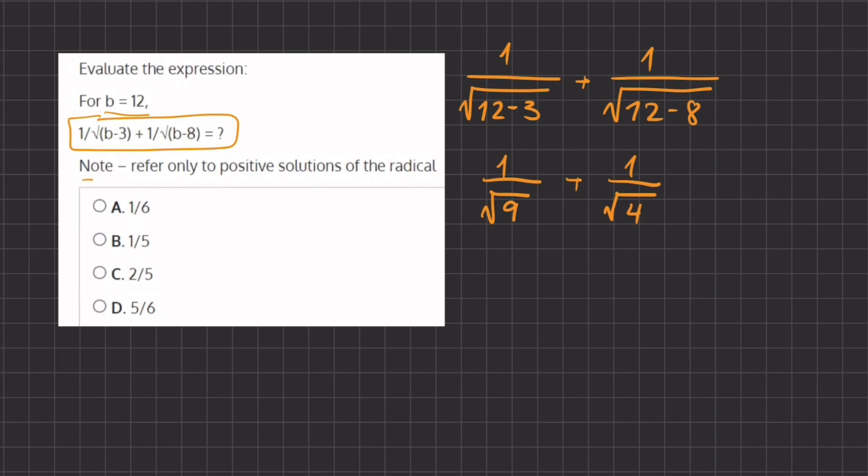Alright, now we have a note here that says to refer to only the positive solutions of the radical. Now we know that in a radical, if we had a regular radical 9, we know that it has two solutions. It could be a negative 3 or a positive 3, but they only want us to refer to the positive solutions of the radical. Alright, so now that we know this, let's simplify this radical.